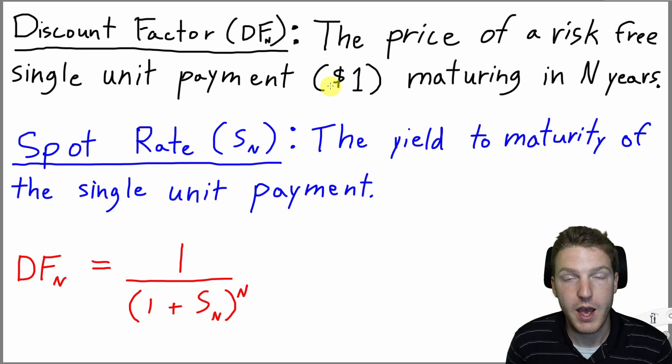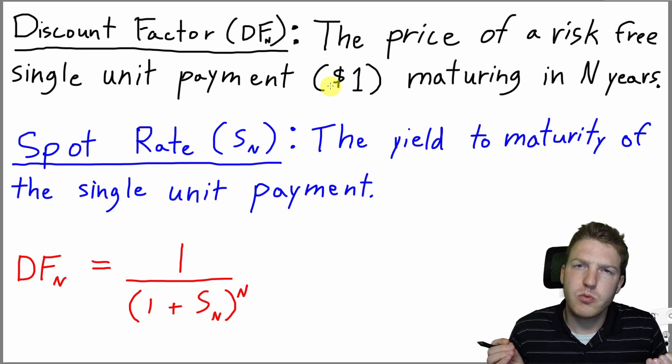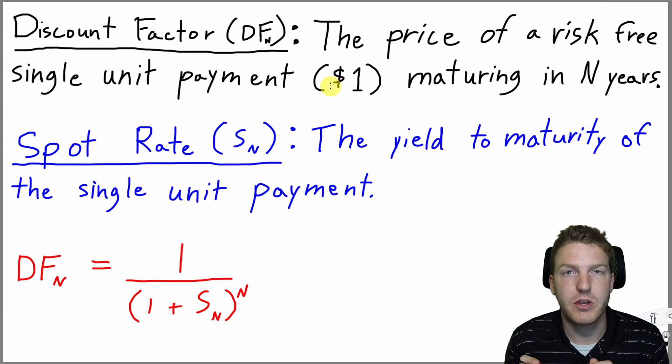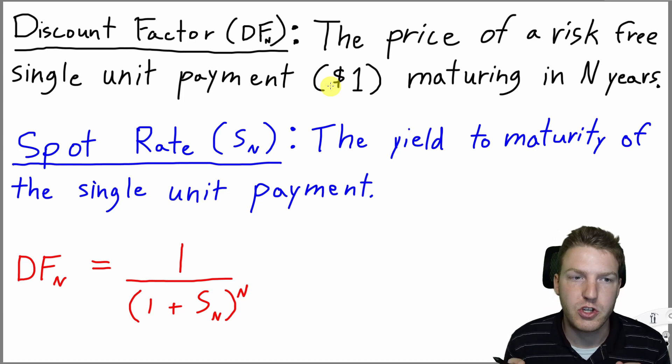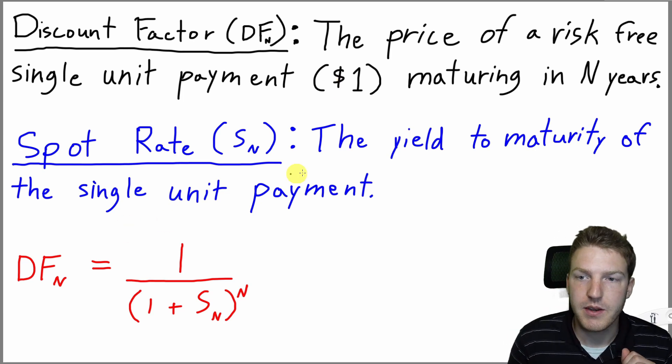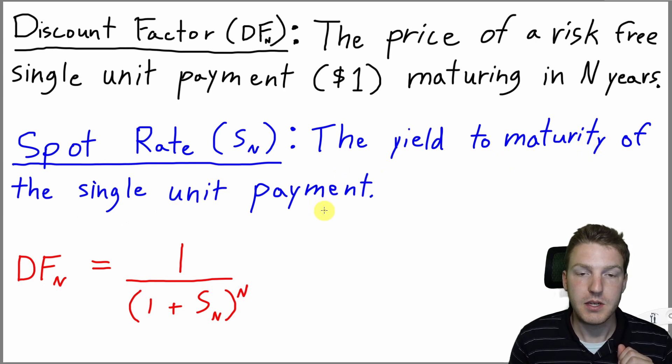So if I wanted to have a guaranteed payment of $1 in 3 years, what price would I have to pay today based on market interest rates to make that exchange happen? The spot rate is the yield to maturity of the single unit payment.